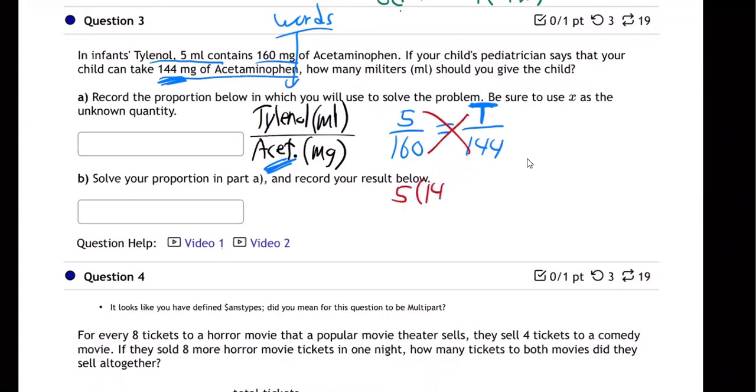Five times 144 is 160 times T. Use your calculator. Use mine. 5 times 144, 720, looks like. 160 T.